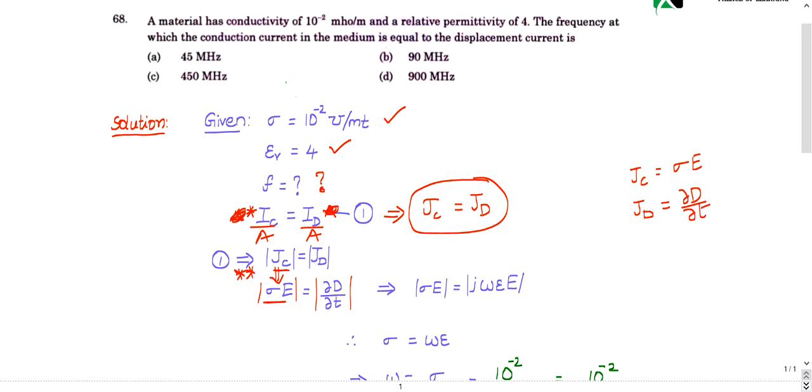Displacement current density is given by dou d by dou t. So both are equated. dou by dou t is nothing but j omega. This partial derivative is nothing but j omega d. Then what is d in terms of electric field? d is nothing but epsilon into electric field. So I can write it as j omega epsilon e.